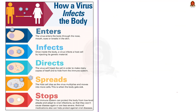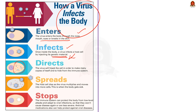Moving on to how a virus infects the human body: the first step is it will enter through the nose, mouth, eyes, or even by breaking through the skin. Second, once inside, it injects its genetic material, infecting the body. Then it hijacks the cell to make many copies of itself while hiding from the immune system. The host cell dies as the virus multiplies and moves into more cells — this is when the body gets sick.